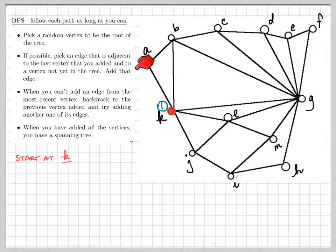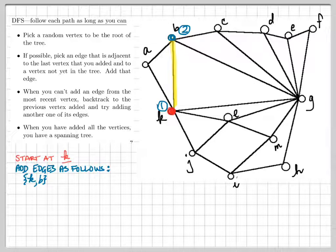At this point we could add any incident edge to K, which means we have a choice of A, B, G, L, or J. I don't know, just to be perverse, I'm going to start by adding B. So we start for our second vertex, I'm going to add the edge K, B, and the vertex B.